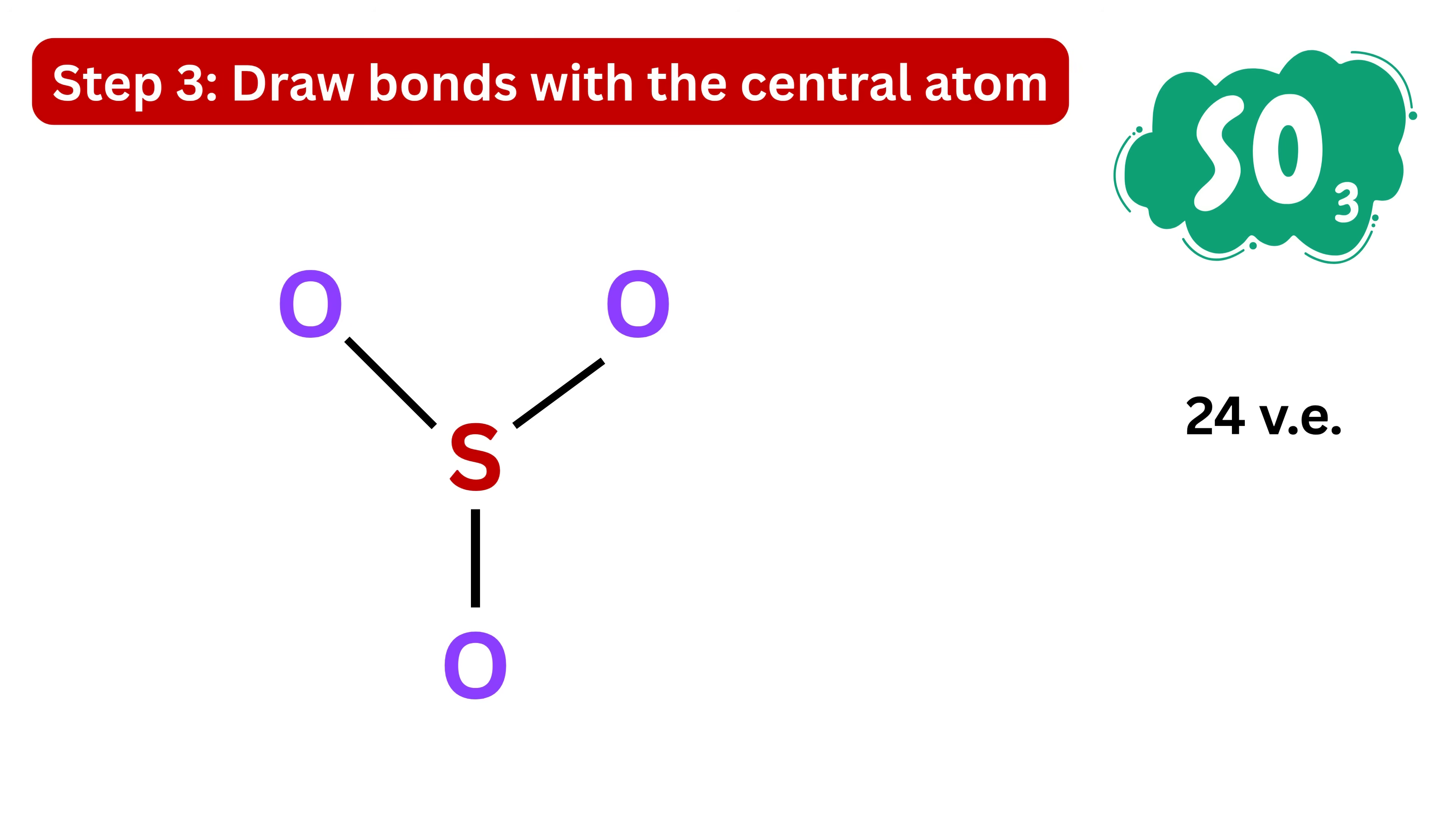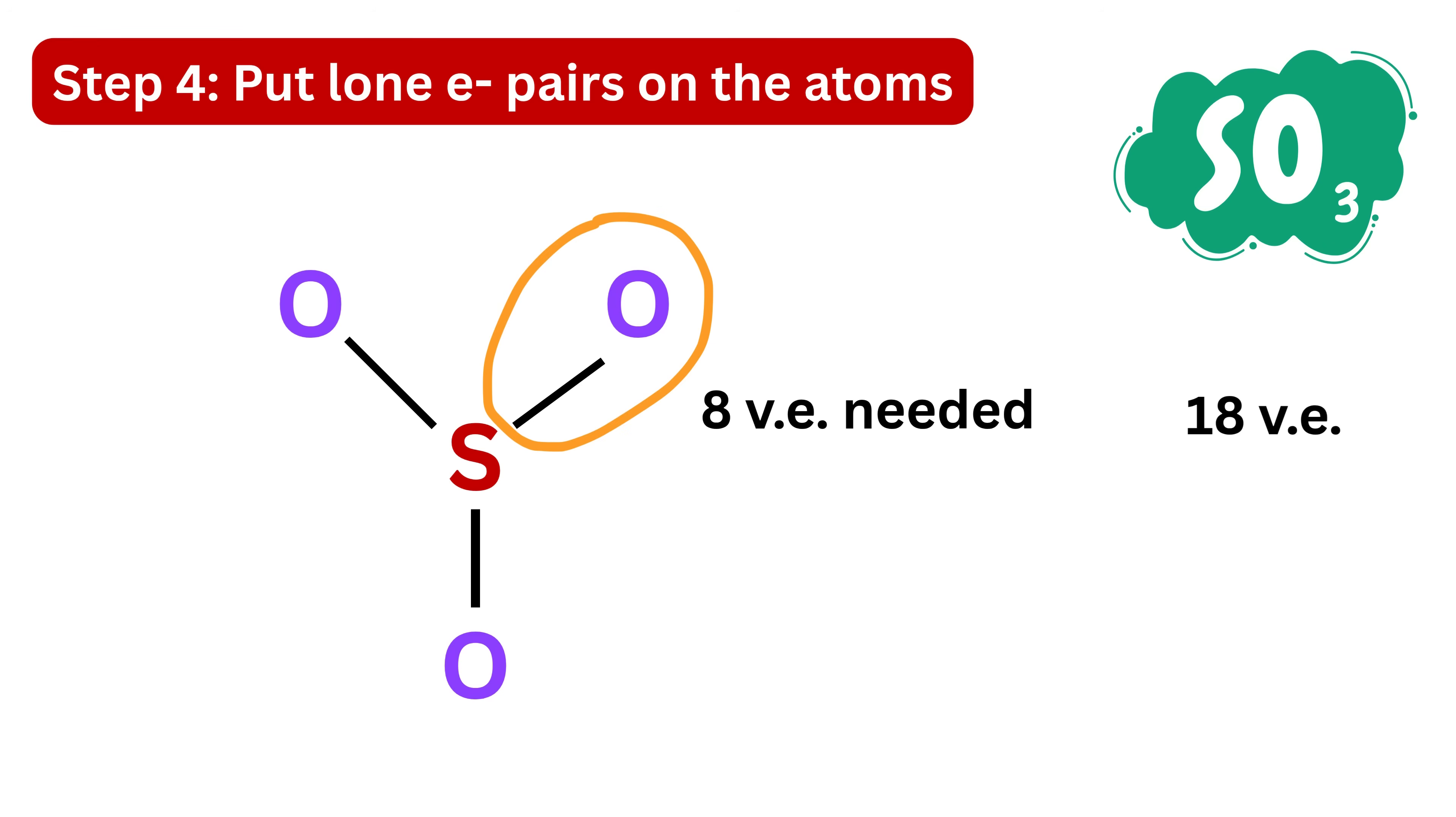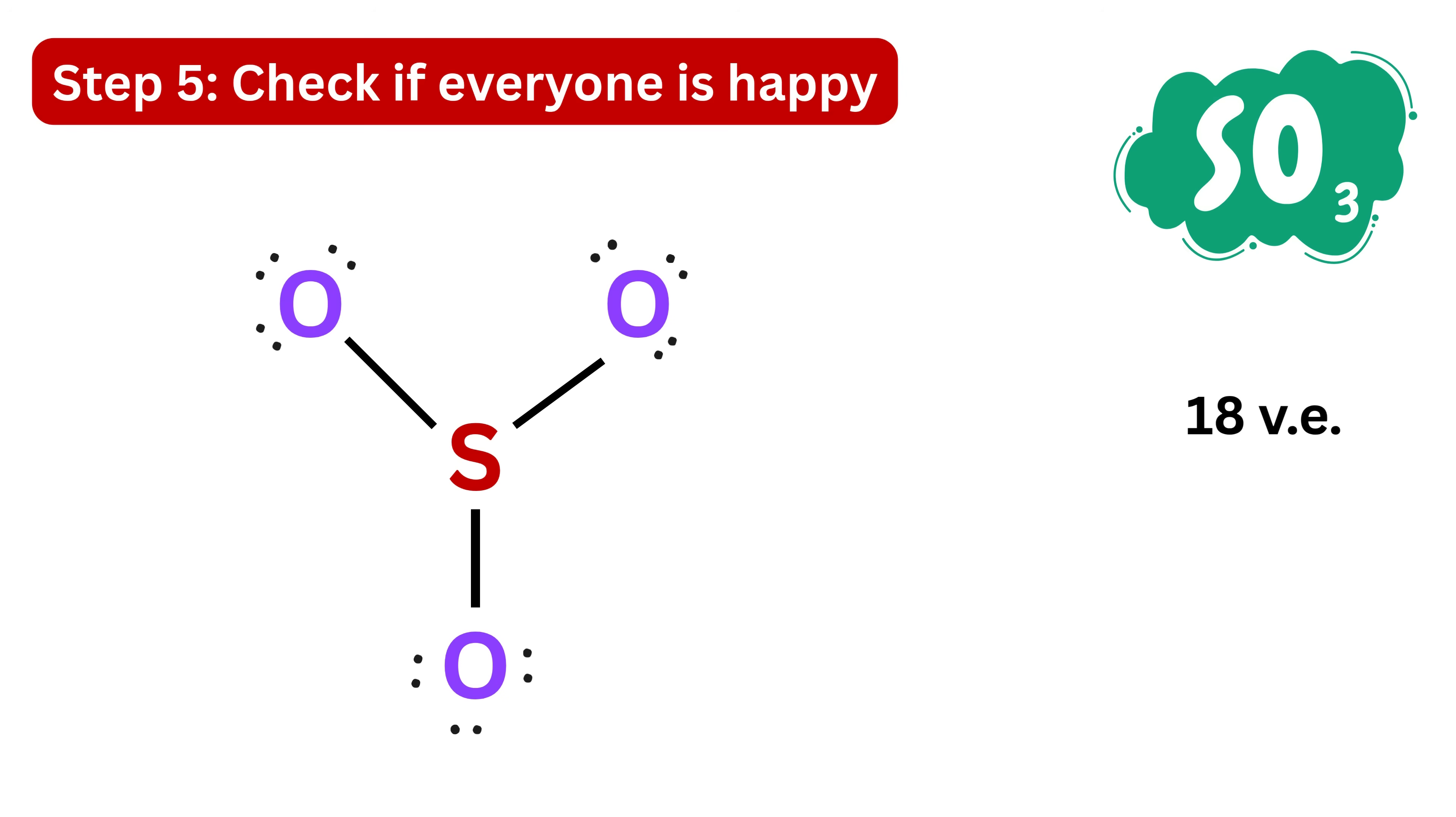In step three, we draw single bonds to the central atom. Each single bond uses two electrons, and since we have three bonds—one to each oxygen—this means we have used six electrons. Subtract six from 24, leaving 18 electrons remaining. Now we start adding the remaining 18 electrons as dots or lone pairs around the outer atoms. Each oxygen wants eight electrons total, so give each oxygen six more dots—that's three lone pairs per oxygen. This way, we've used all 18 remaining electrons.